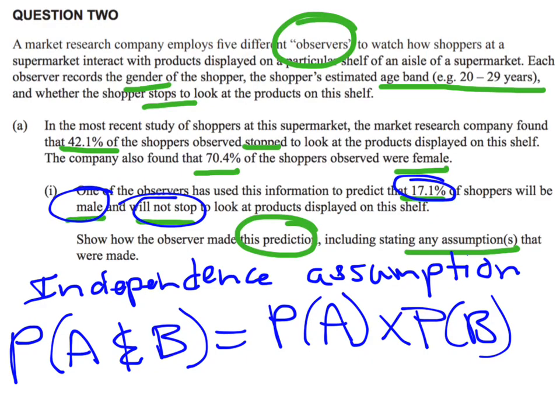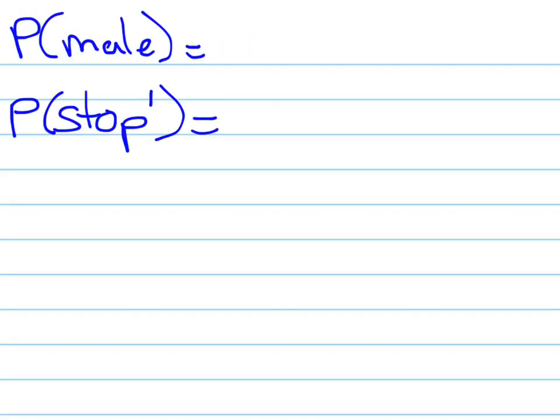Let's start with the male. I'm told that 70.4% of the shoppers were female. So either they're female or they're male. If we know the probability of female, the probability of male is going to be 1 minus the probability of female. So 1 minus 0.704, and that gives me 29.6% of shoppers were male.